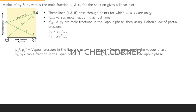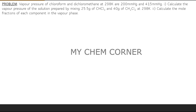Now based on this theory, here is a problem. The vapor pressures of chloroform (CHCl₃) and dichloromethane (CH₂Cl₂) at 298 K are given. We need to: (1) calculate the vapor pressure of the solution prepared by mixing 25.5 g of CHCl₃ and 40 g of CH₂Cl₂, and (2) calculate the mole fraction of each component in the vapor phase.